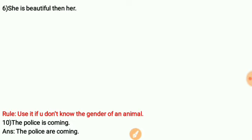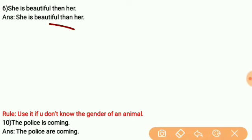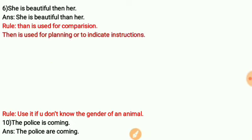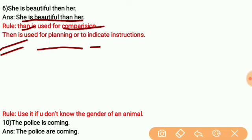Next: 'She is beautiful than her.' The error is 'than' — the correct word for comparison is 'than' (T-H-A-N), not 'then' (T-H-E-N). 'Then' is used to indicate time or sequence — for planning or indicating order. 'Than' is used for comparison. So the correct sentence is: 'She is more beautiful than her.'